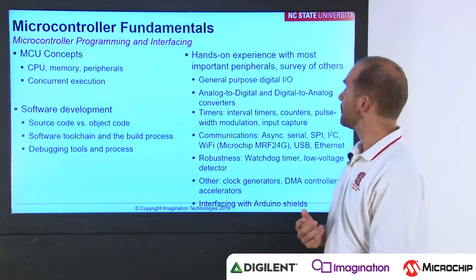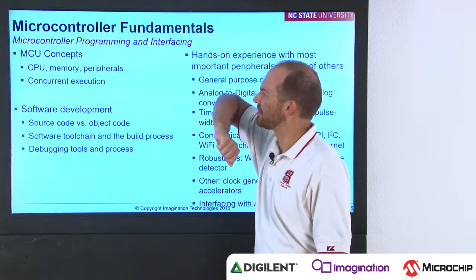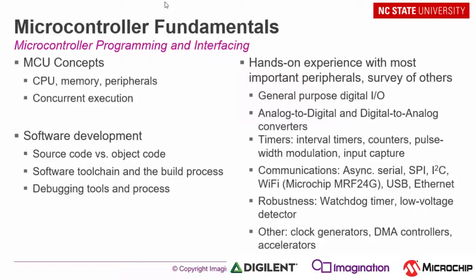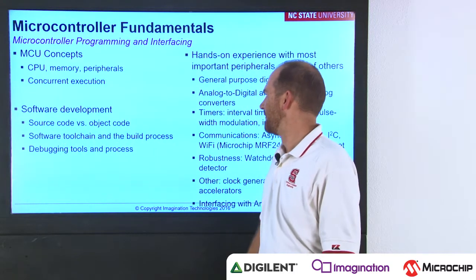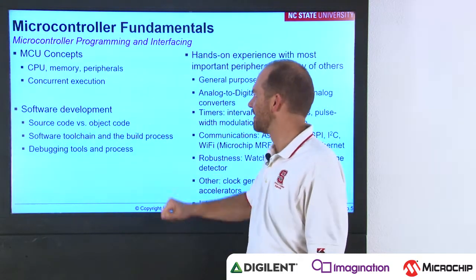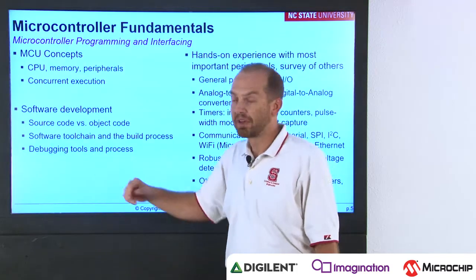In this course, students start off by learning microcontroller fundamentals — microcontroller programming and interfacing. They learn concepts such as what the CPU is and what it does, what the memory is and how it works, what peripherals are and how they can be used, and how we combine all three to create a system that can execute multiple sections of a program concurrently — software as well as hardware executing simultaneously. We look at software development, the differences between source code and object code, the software tool chain, the build process, and we also work with debugging tools and learn debugging processes.